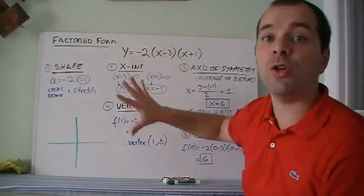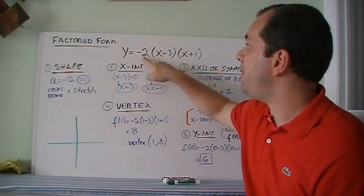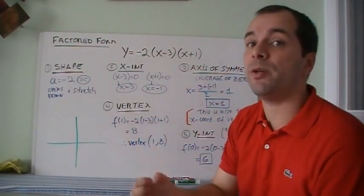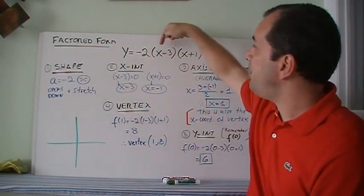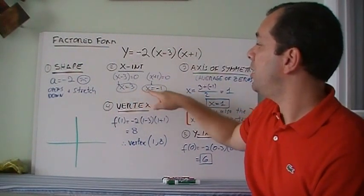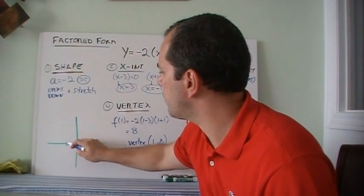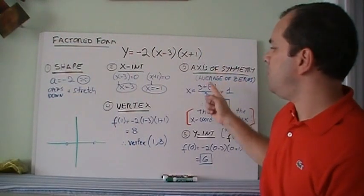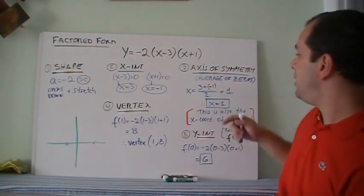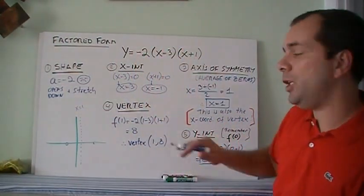Now let's try factored form: y = −2(x − 3)(x + 1). The 'a' value is −2, which is negative, so it opens down. It's also a stretch since the magnitude is bigger than 1. For the x-intercepts, I need numbers that make each bracket zero: that gives x = 3 and x = −1. Plotting those zeros, the axis of symmetry is right in between: (3 + (−1)) ÷ 2 = 1, so the axis of symmetry is x = 1.